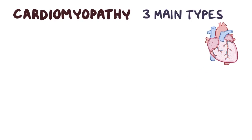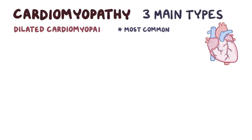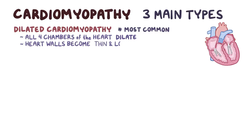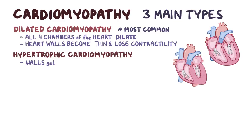There are three main types of cardiomyopathy. The most common type is dilated cardiomyopathy, where all four chambers of the heart dilate or get bigger, and the heart walls become thin and lose contractility. Next up is hypertrophic cardiomyopathy, where the walls get thick, heavy, and hypercontractile.